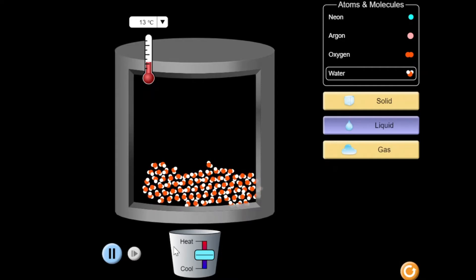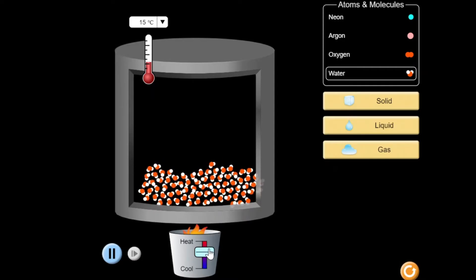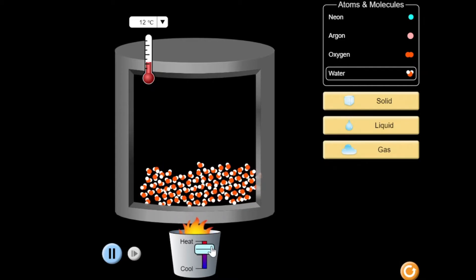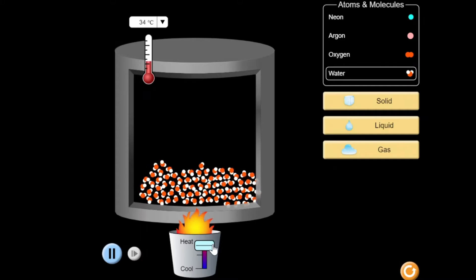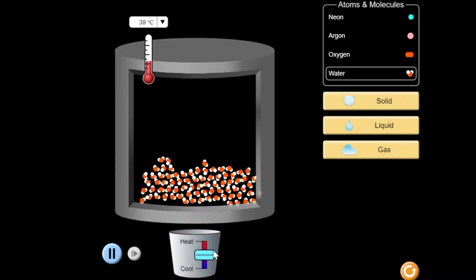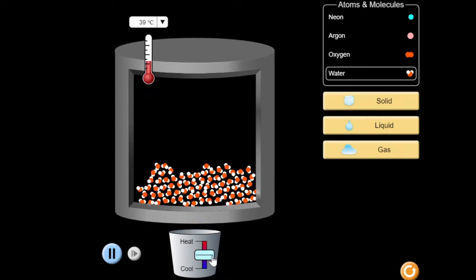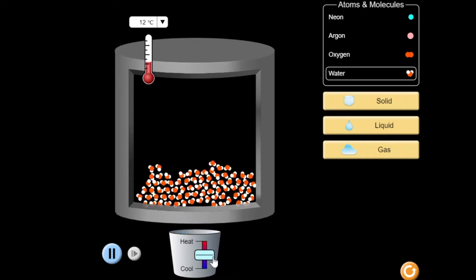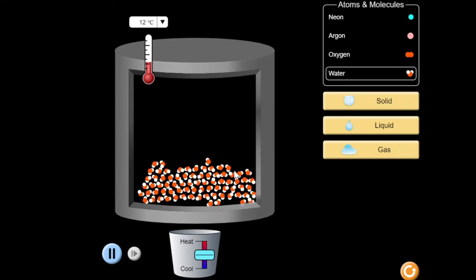Below our container is a bucket filled with either fire or ice. So if we move the lever upward, it means addition of heat. We can say it becomes hotter. If we move the lever downward, it's removal of heat, represented by ice. It means that the container becomes cooler.